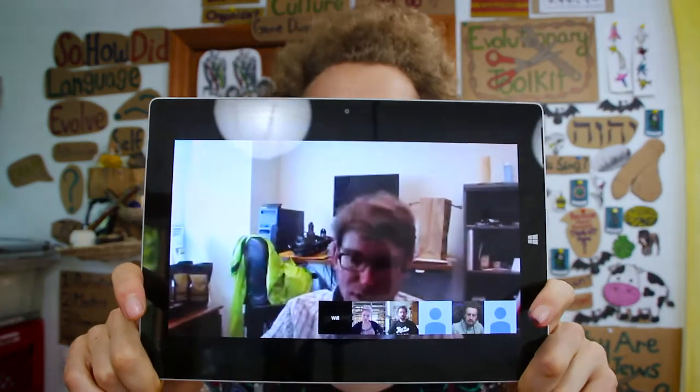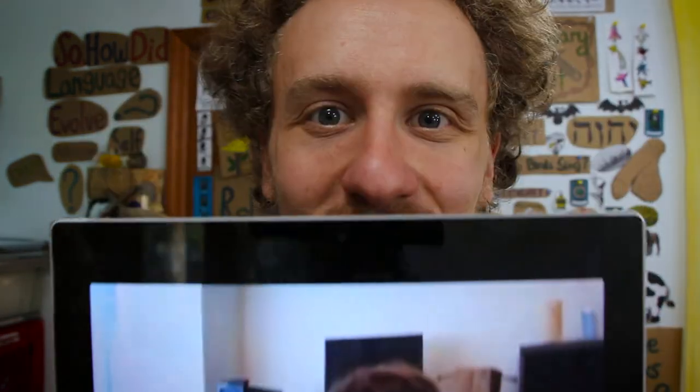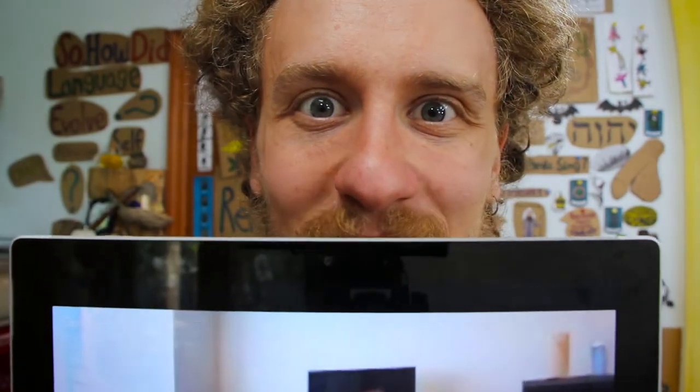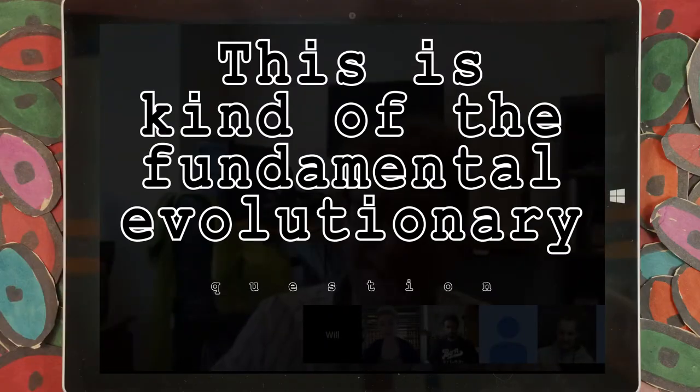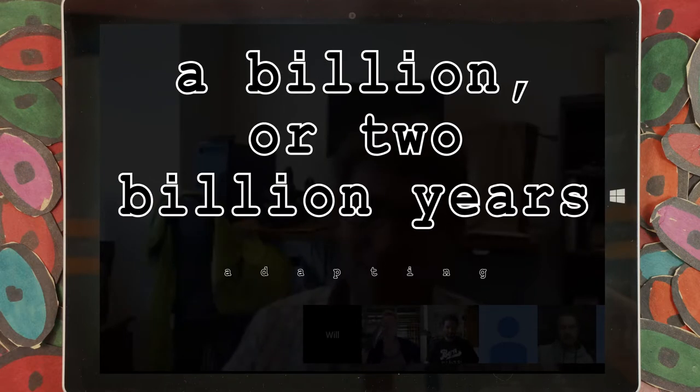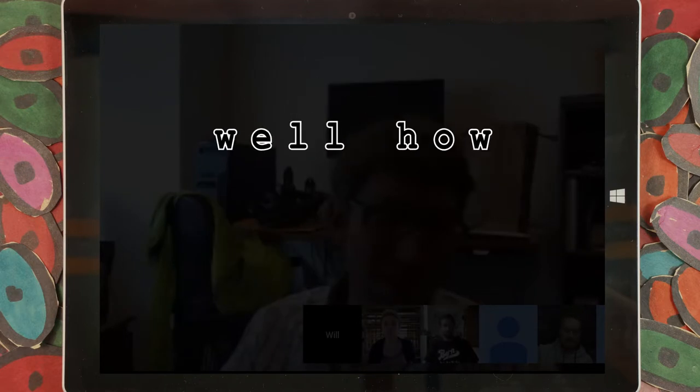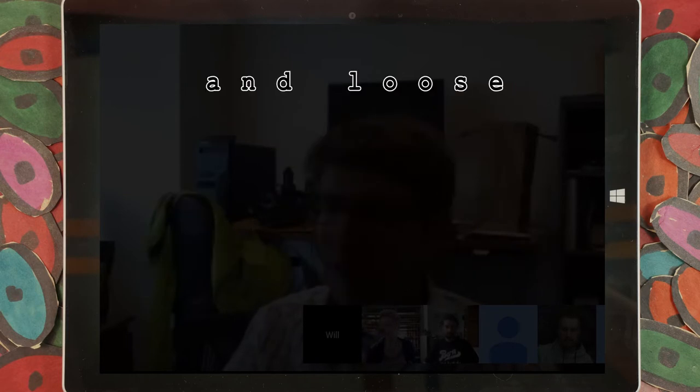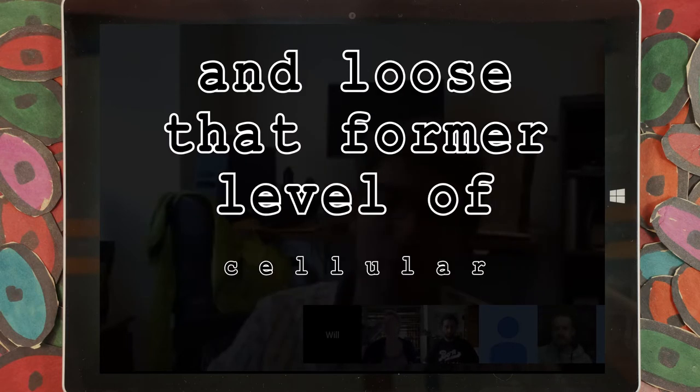So in this final episode, we're going to hear from Dr. William Ratcliff, who actually studies individuality in the laboratory. This is kind of the fundamental evolutionary question, right? If single-celled things have spent a billion or two billion years adapting as a cell, how do they now form a group and lose that former level of cellular individuality?